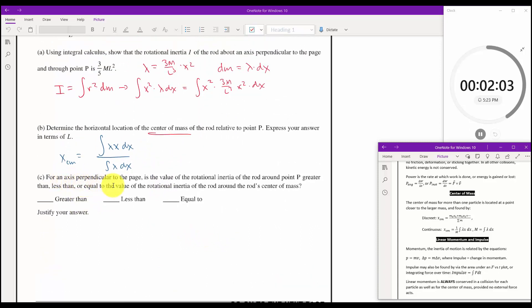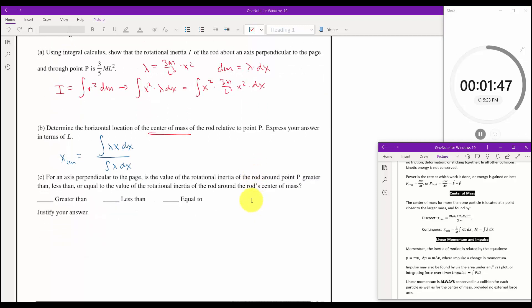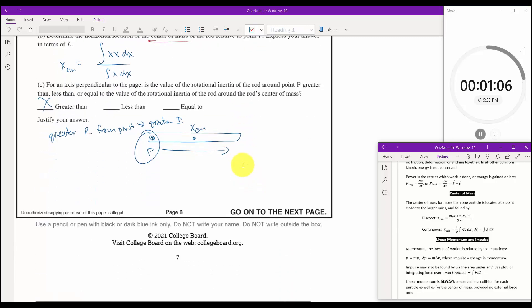Not sure how many points are for each of those things, but I don't really feel like putting all that stuff in right now to do it. Only two minutes left. But it says, for an axis perpendicular to the page, is this value of rotational inertia of a rod about point P greater than, less than, or equal to a value of the rotational inertia of the rod about its center of mass? So if the rod is denser as you get further out, and we're going around point P right now, is it more rotational inertia at point P, or is it more rotational inertia about this position here? Well, it's clearly going to be more rotational inertia about point P, because there's mass farther out. So it should be greater than, and justify your answer, greater R from pivot gives greater I.